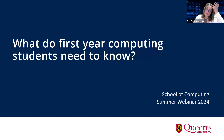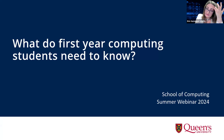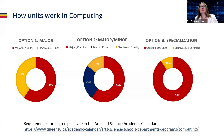We've got a presentation put together this evening, so let's get started. First thing we'll go over is how units work in computing. This graphic has been very helpful to show the differences between what's a major, a major-minor, and what's a specialization. The two main things that we offer are the major and the specialization.